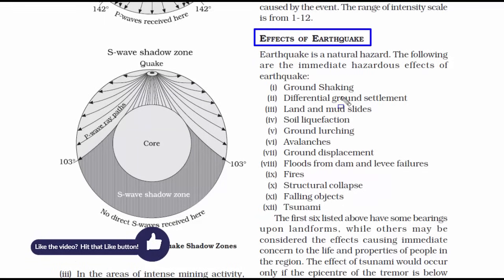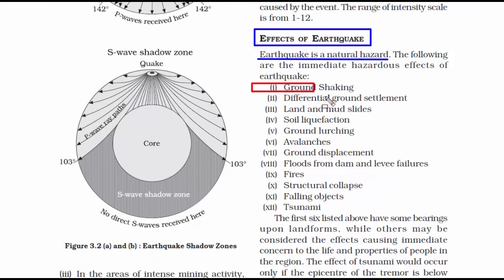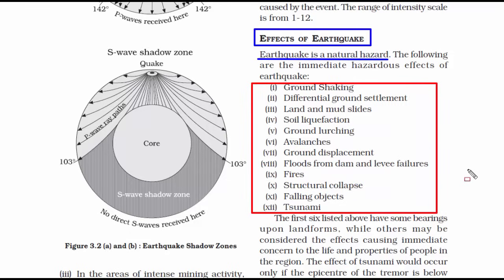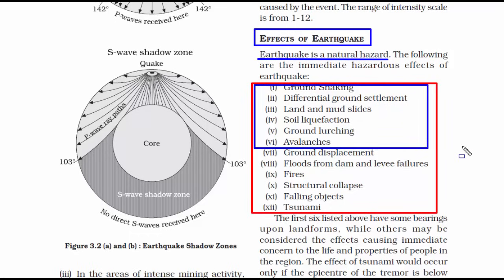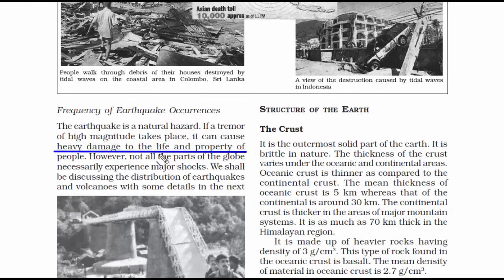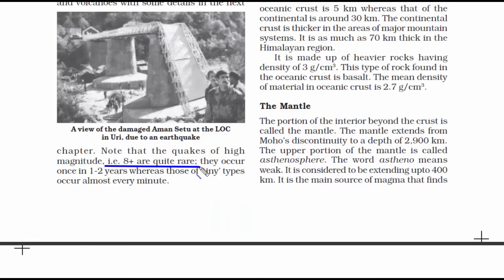Earthquake is a natural hazard with many effects. The first six effects relate to landforms: ground shaking, differential ground settlement, land and mudslides, soil liquefaction, ground lurching, and avalanches. The remaining effects concern the life and properties of people in that region. Earthquakes with high magnitude can cause heavy damage to life and property. A magnitude of 8 or more is very rare, occurring once in one to two years, whereas tiny tremors occur almost every minute due to constant changes happening inside the earth's surface.